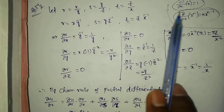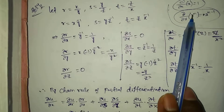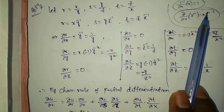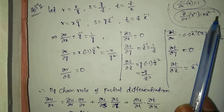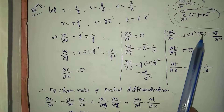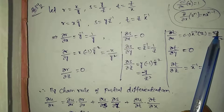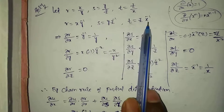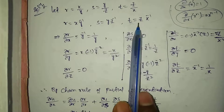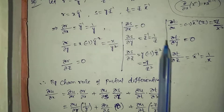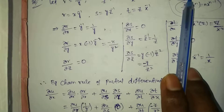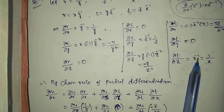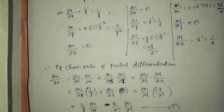For ∂t/∂x: using the power rule with n = -1, x to the power of -2, z is constant outside, so ∂t/∂x = -z/x². For ∂t/∂y: y is not involved in t = z/x, so ∂t/∂y = 0. For ∂t/∂z: applying the formula, ∂/∂z(z) = 1, so ∂t/∂z = 1/x.